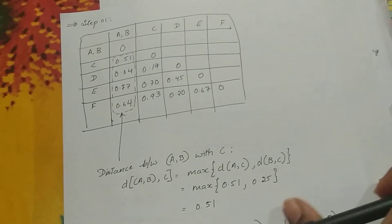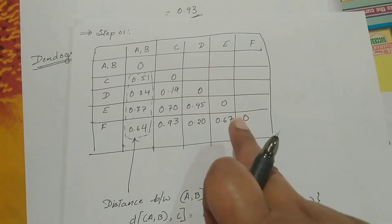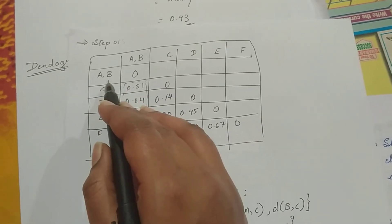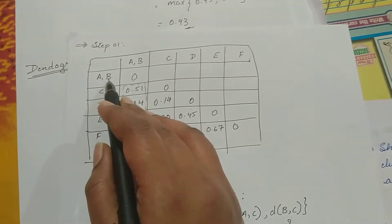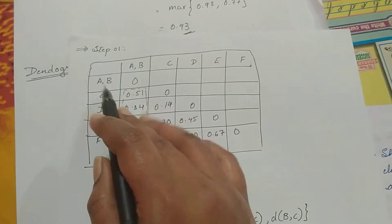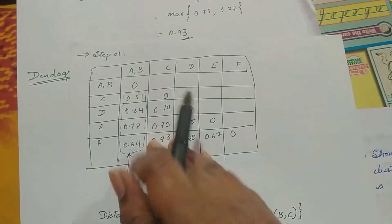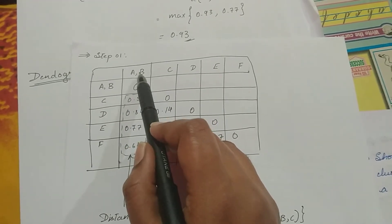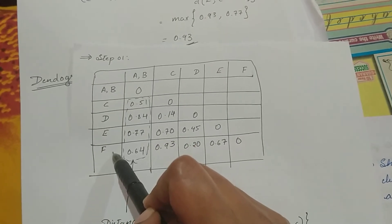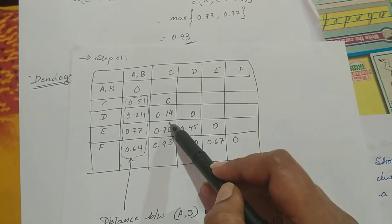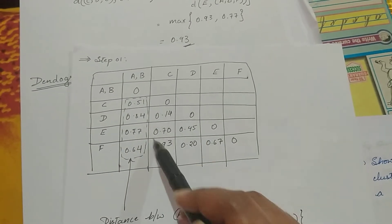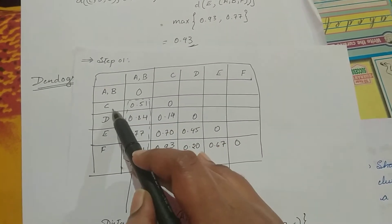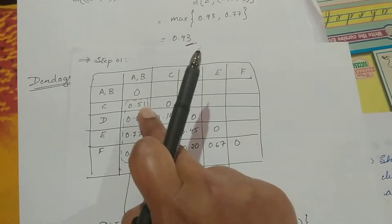So I cluster A and B together. This new table groups A and B because they have the minimum distance between them — they now form one cluster. Our task is now to find the distance of the AB cluster with all other points; the remaining distances stay the same as in the previous table.